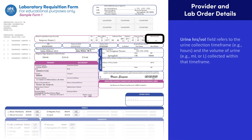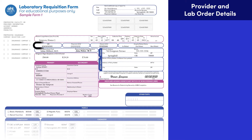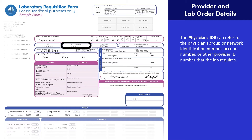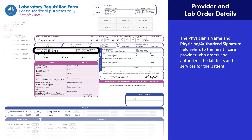For urine chemistry tests, such as a 24-hour urine collection test, the urine hours per volume field refers to the urine collection time frame and the volume of urine collected within that time frame. The National Provider Identification Number, or NPI, refers to the unique identification number that health care providers receive under HIPAA's Administrative Simplification Standard. The physician's ID number can refer to the physician's group or network identification number, account number, or provider ID number that the lab requires. The physician's name and physician-authorized signature fields refer to the health care provider who orders and authorizes the lab tests and services for the patient.